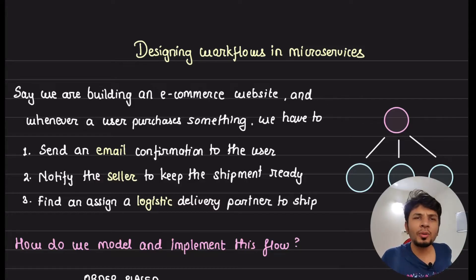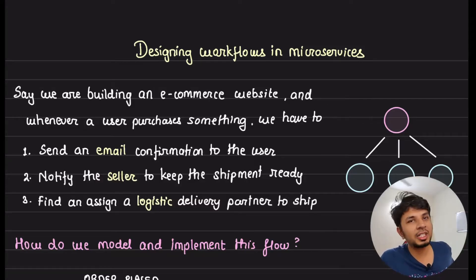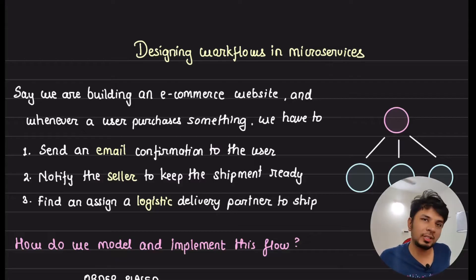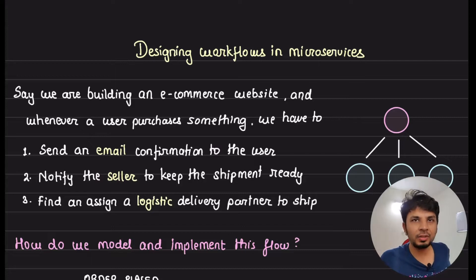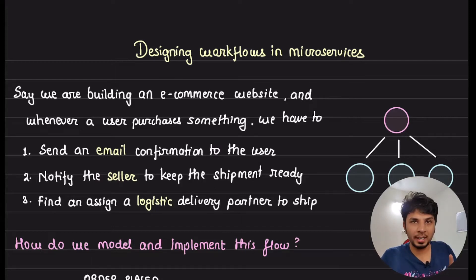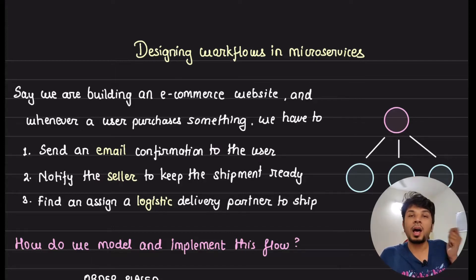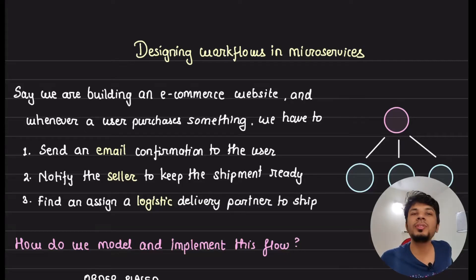So how can we implement them? There are two high-level architecture patterns to implement workflows in a microservices-based architecture: orchestration and choreography. In this video, we take a detailed look into the two patterns — what they are, how they are implemented, and which one to use when.